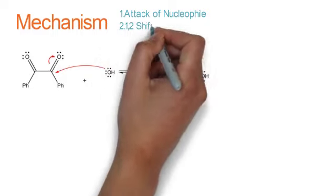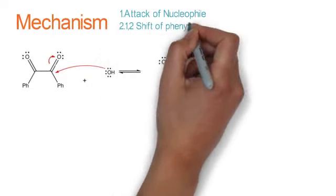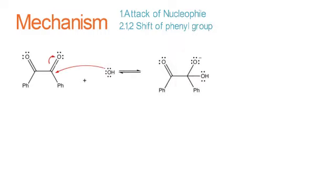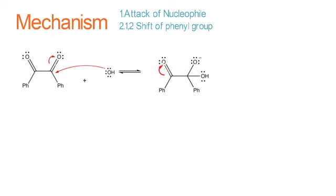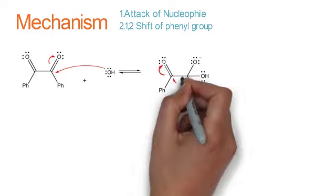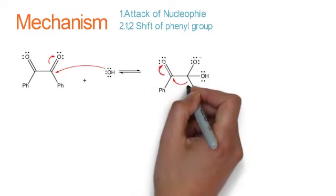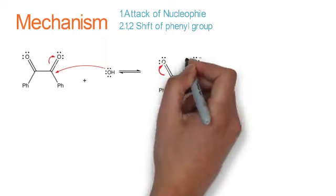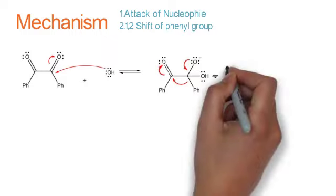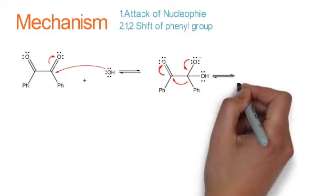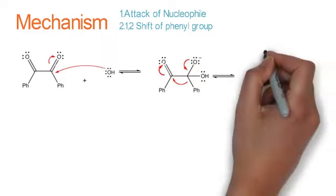In the second step, there is 1,2-shift of phenyl group from first carbon to second carbon. The carbonyl carbon breaks the pi bond and phenyl group is shifted towards electron deficient carbon. And the lone pair on oxygen again creates a pi bond with the carbon.